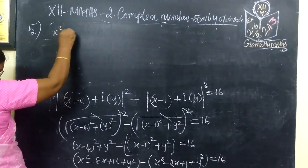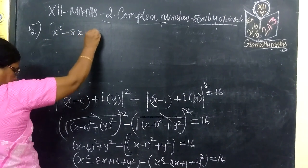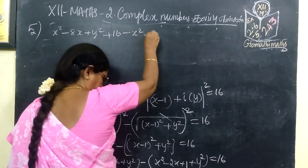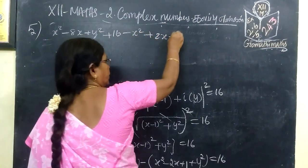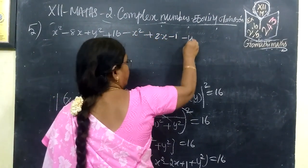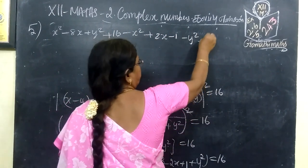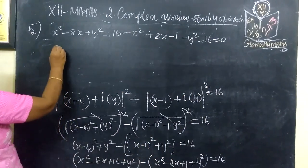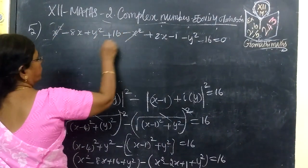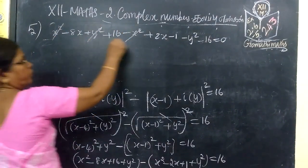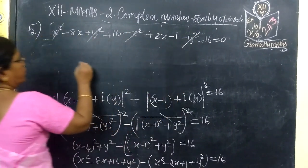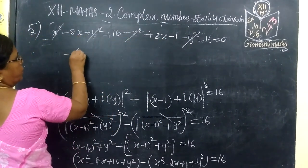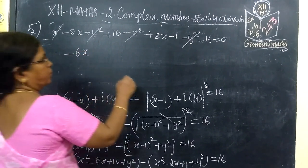Expanding fully: x squared minus 8x plus y squared plus 16, minus x squared plus 2x minus 1 minus y squared, minus 16 equals 0. The x squared terms cancel and the y squared terms cancel. Combining x terms: minus 8x plus 2x gives minus 6x.